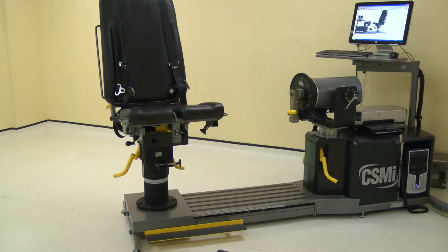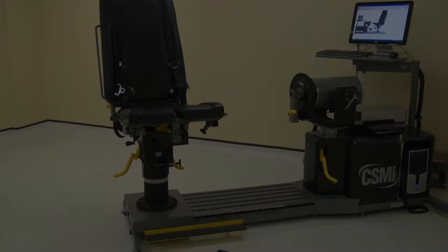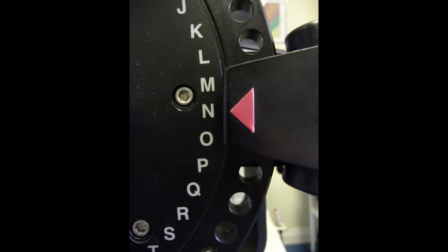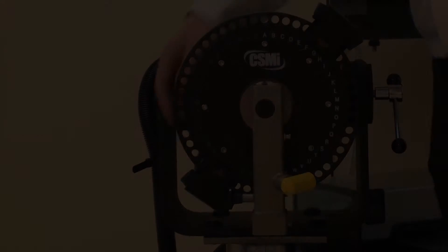To position the machine, first ensure all of the adapters and stabilizers are removed. Move the first dynamometer stop to position N on the white scale. Now move the second stop to position N on the green scale.